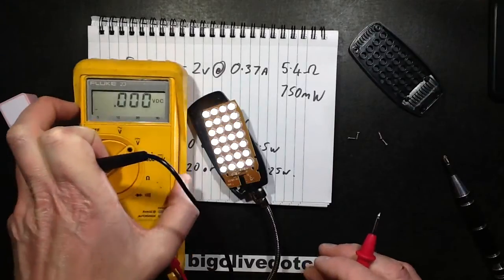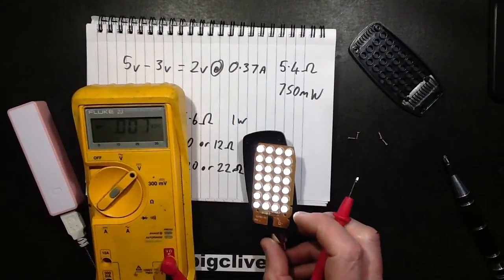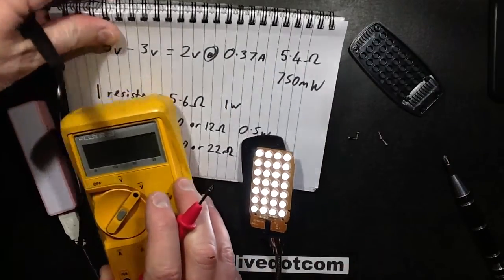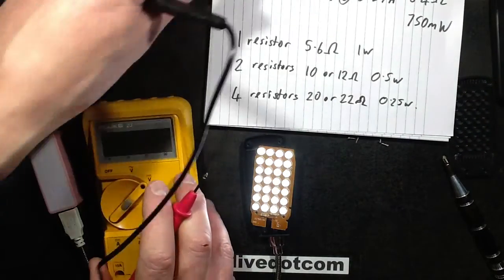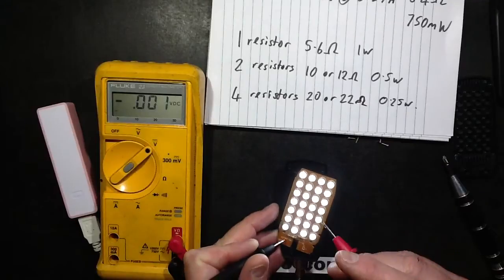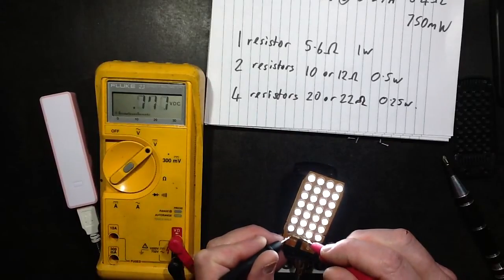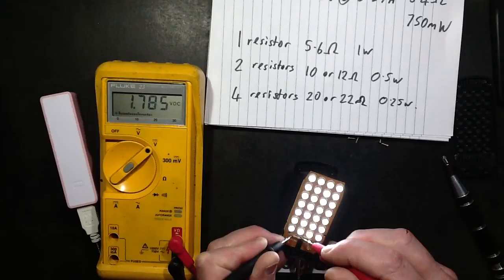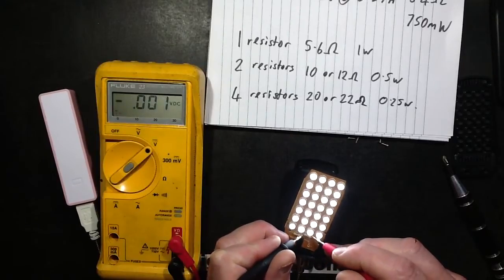So let's get the meter into shot. In fact I'll just get rid of this paper over here. And the voltage being dropped across the resistors is 1.8 volts, pretty close to the two, 1.8.